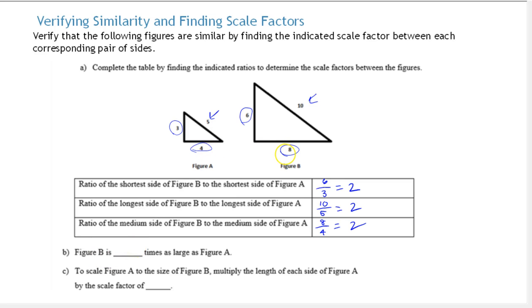So we can say figure B is 2 times as large as figure A. To get from figure A to figure B, we multiply the length of each side of figure A by the scale factor of 2. Looking at this diagram: to get from 3 to 6 we multiply by 2; these sides correspond. If I wanted to scale up to figure B from A, I'd multiply 4 by 2 to get 8, and multiply 5 by 2 to get 10.